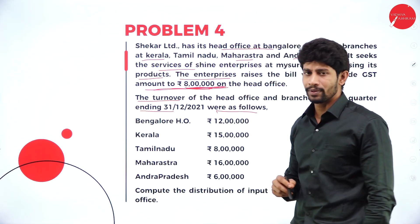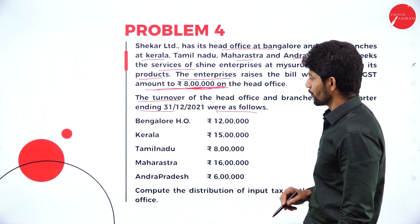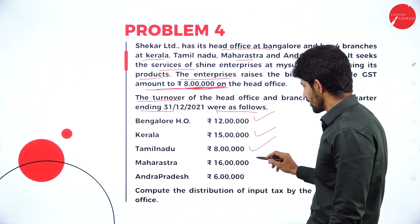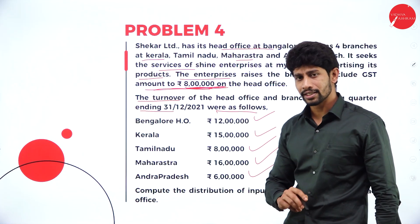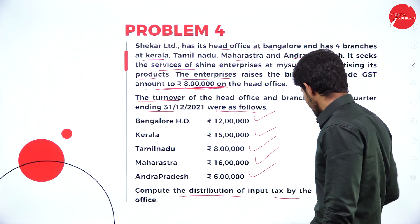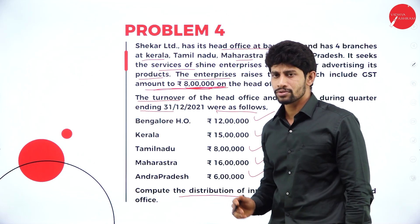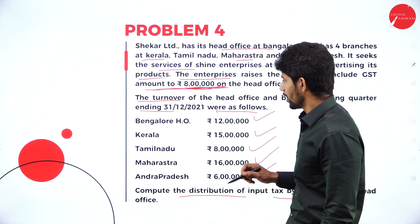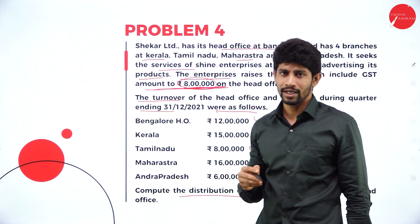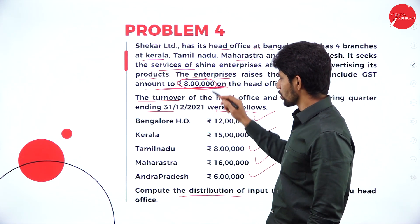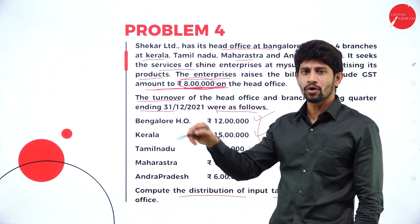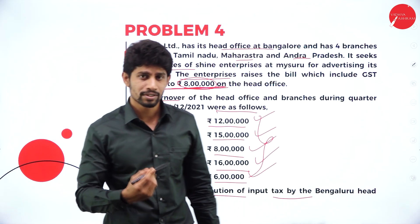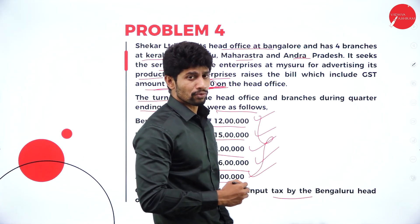You will be distributing this 8 lakh rupees based on the turnover of each branch. Bangalore head office: 12 lakh rupees turnover. Kerala: 15 lakh rupees. Tamil Nadu: 8 lakh rupees. Maharashtra: 16 lakh rupees. Andhra Pradesh: 6 lakh rupees. Compute the distribution of input tax by the Bangalore head office — using this information you are supposed to find out how the Bangalore head office distributes the input tax credit to the other branches. The formula to distribute that amount is straightforward.